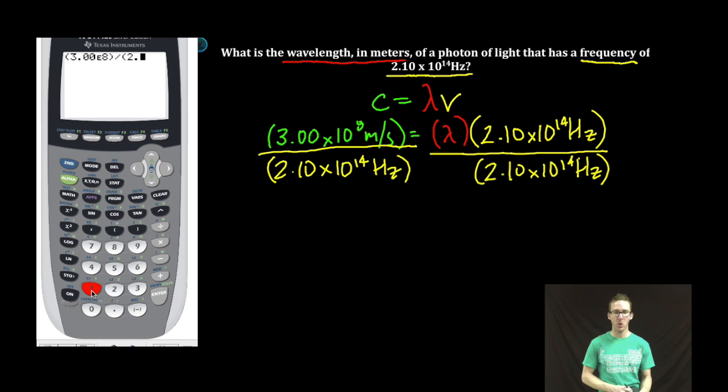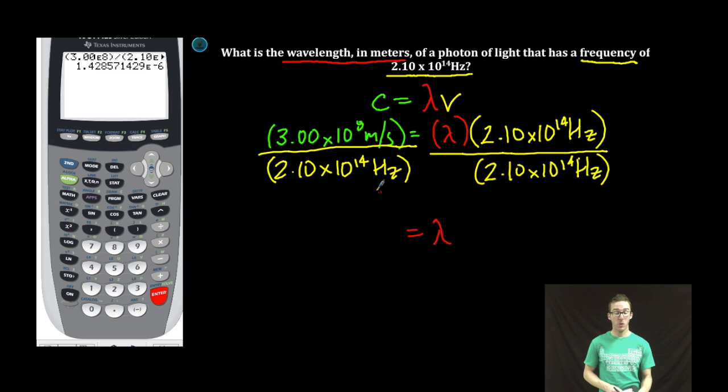As I look to get my answer here, I want to make sure I remember the rules for significant figures. We've got 3 sig figs in my speed of light constant. I've got 3 sig figs in my frequency. So my final answer here should be rounded to 3 sig figs. 1.43 times 10 to the negative 6 meters. Boom! Wavelength of light.